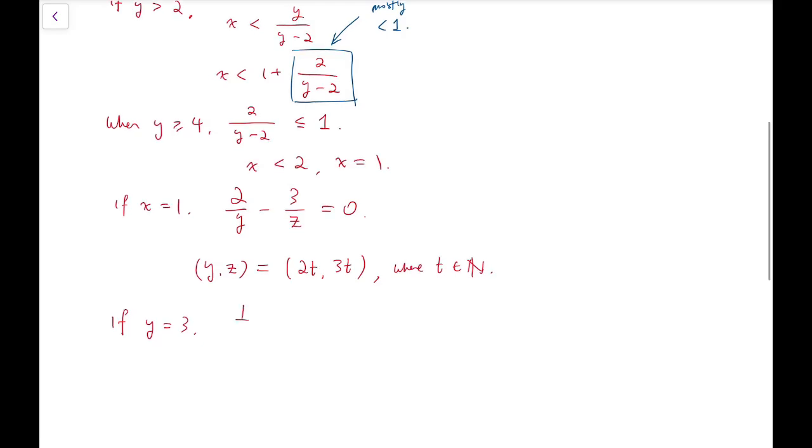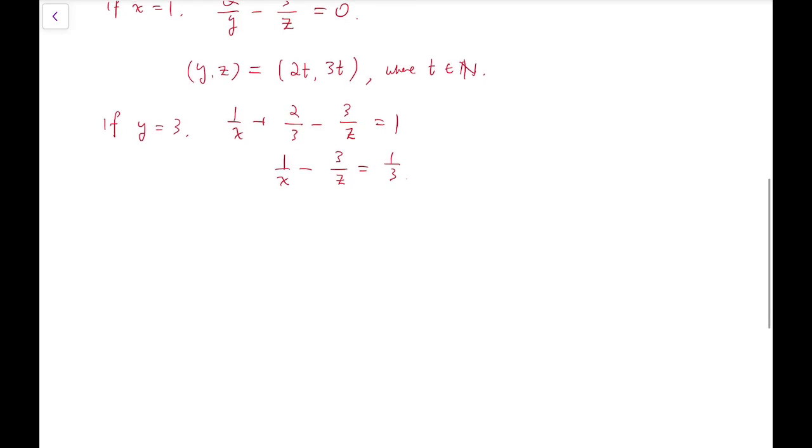the original equation becomes 1 over x plus 2 over 3 minus 3 over z equals 1. And so that's 1 over 3.